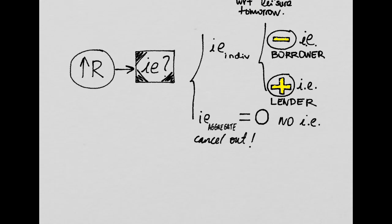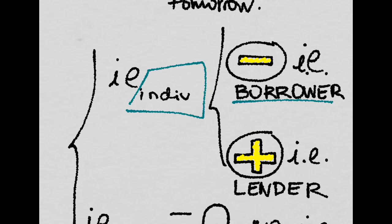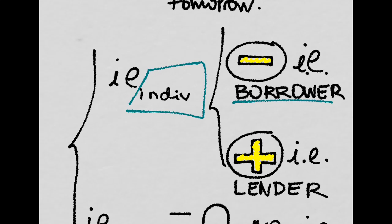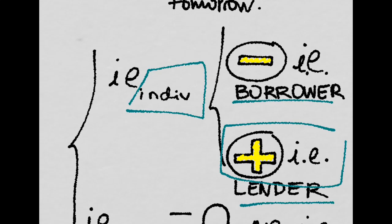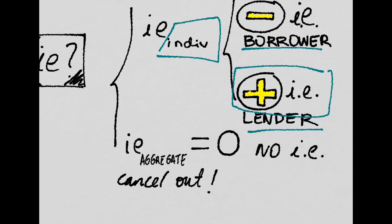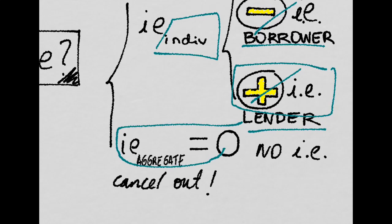Is there an income effect? If the individual happens to be a borrower, an increase in the interest rate means he has to pay more in the future for the money he is borrowing now, so it will be a negative income effect for him. But if you are a lender, you will be paid more interest, so it is a positive income effect for you. But on aggregate, both cancel out, and the income effect is actually zero — there is no income effect on aggregate after an increase in the interest rate.